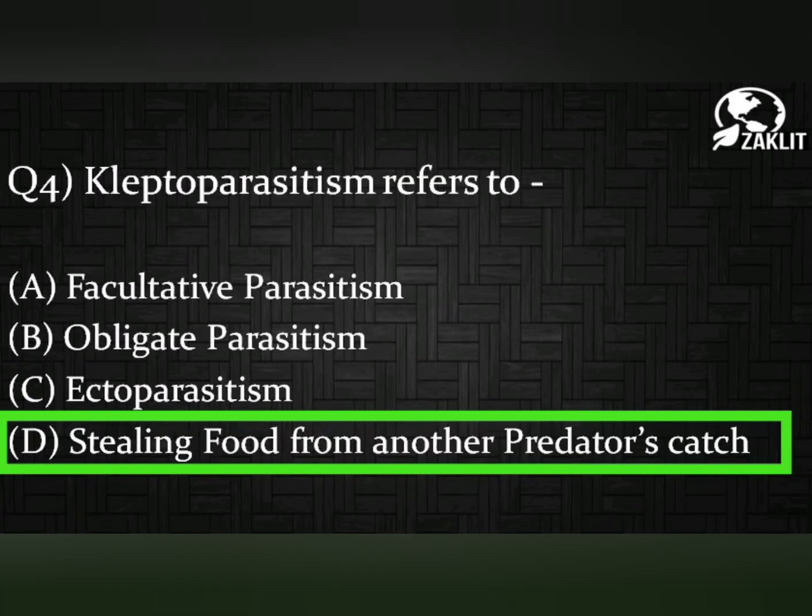The fourth question was: kleptoparasitism refers to — the correct option is option D: stealing food from another predator's catch.